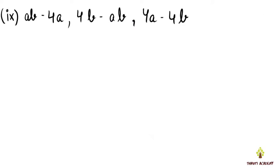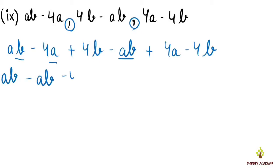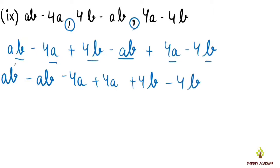The next expression: we add AB - 4A + 4B, minus AB + 4A, minus 4B. Grouping: AB and minus AB cancel, plus 4A and minus 4A cancel, plus 4B and minus 4B cancel. So our final answer is 0.